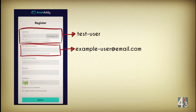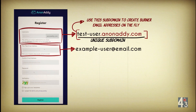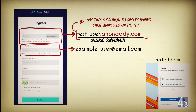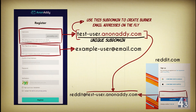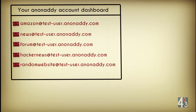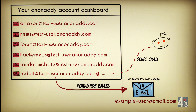Assuming that username is available, you'd be assigned a unique subdomain called testuser.anonaddy.com to create burner email addresses or aliases on the fly. So if you're signing up to Reddit and don't want to use your personal email, you could use an alias like reddit@testuser.anonaddy.com. Any email sent to that address would be forwarded to your real email address, exampleuser@email.com.